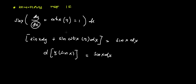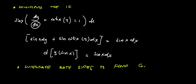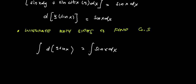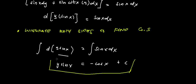We can now integrate both sides to find our general solution. The integral of this exact derivative equals the integral of sin(x)dx. The integral of the derivative gives us the term inside: y·sin(x) equals the integral of sin(x), which is negative cosine x, plus C. So we now have our general solution.